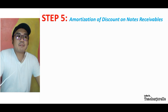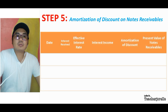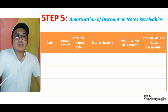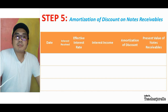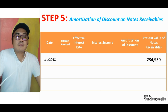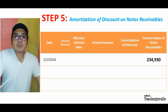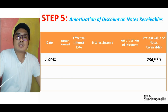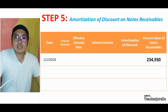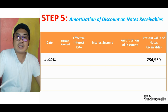The last step is amortization of discount on notes receivable. We will use a table with the following columns: date, interest received, effective interest rate, interest income, amortization of discount, and the present value of the note receivable. On January 1, 2018, the present value of the note receivable is 234,930.